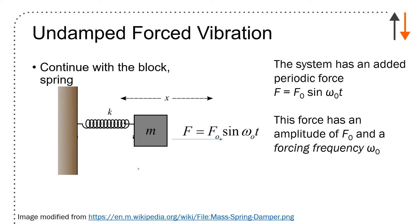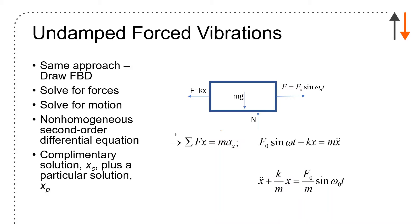For undamped forced vibration, we've looked at cases where we introduce oscillation. You're going to solve for the problem in two parts: you'll have a forcing frequency omega_0 with an amplitude of F_0. Same approach—draw the free body diagram, but now instead of just having the spring term, you have a second term which is the forcing frequency, and you end up with an expression of this form.